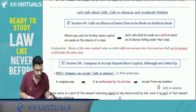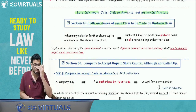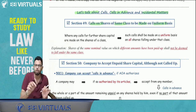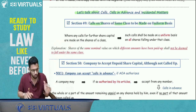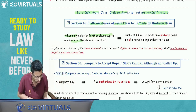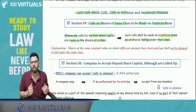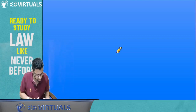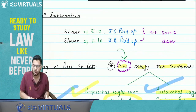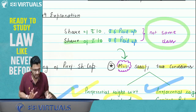Section 49 — Calls on Shares of Same Class to be Made on Uniform Basis: Within the same class, calls must be made equally on all shares — you cannot demand more from one shareholder and less from another. Where any calls for further share capital are made, they must be uniform within that class.